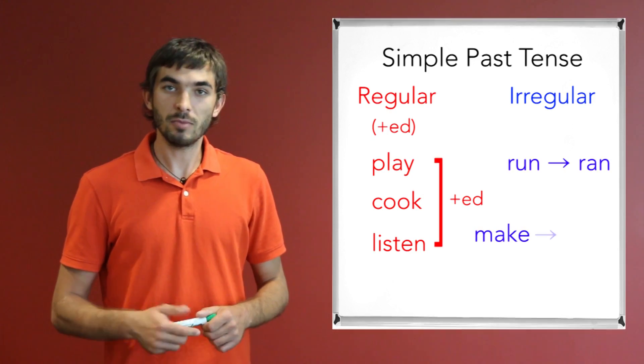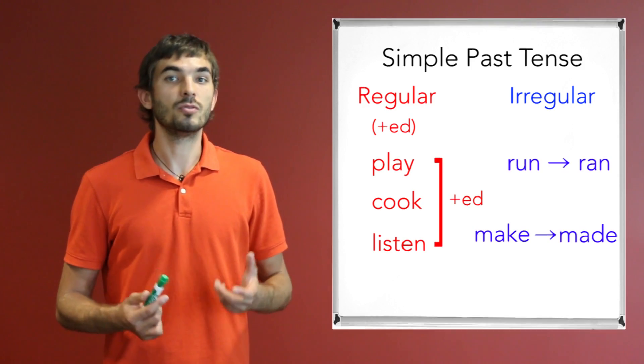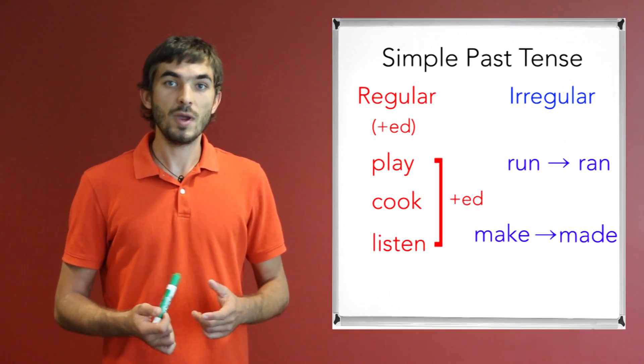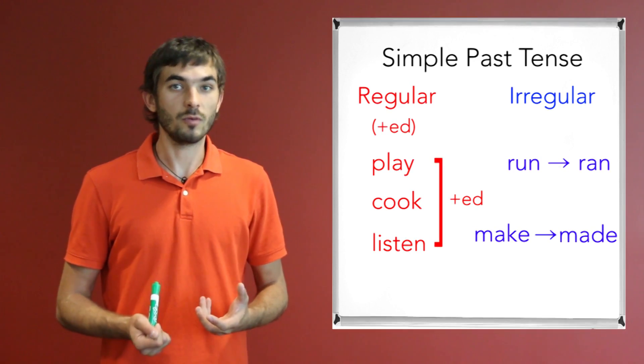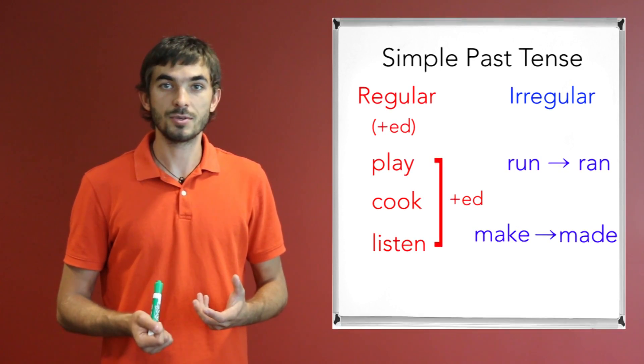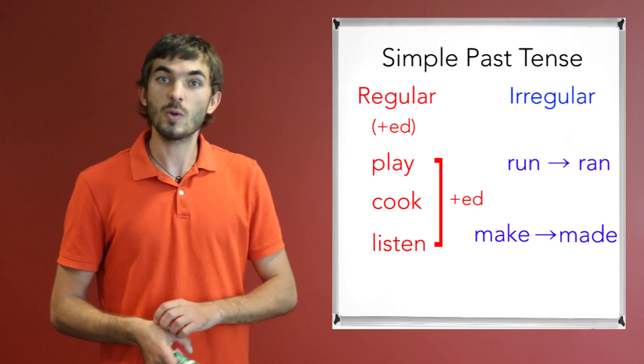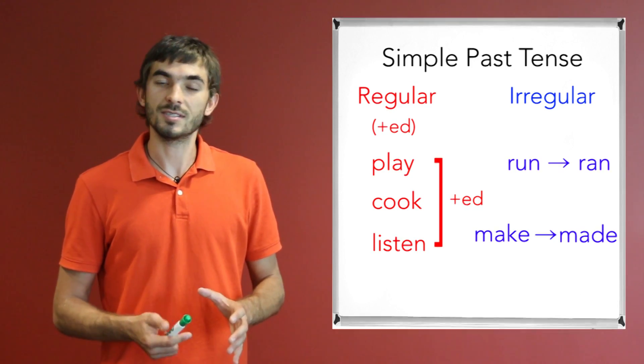The simple past tense form is 'made'. So, in order to use irregular verbs in simple past tense, we have to memorize all these forms of the simple past tense irregular verbs. There are more than 500 irregular verbs in English language. So we have to be very careful when we use irregular verbs in simple past tense.